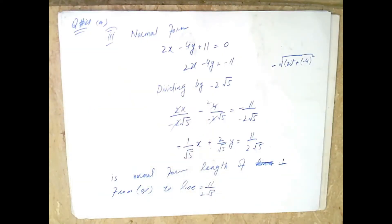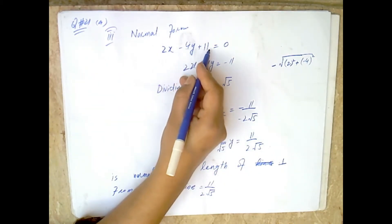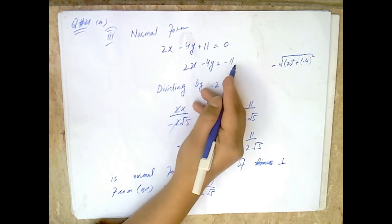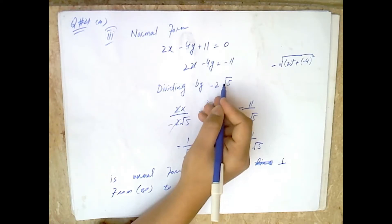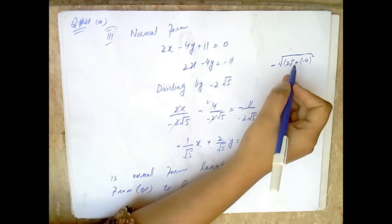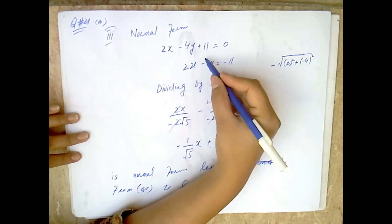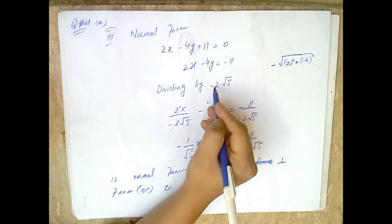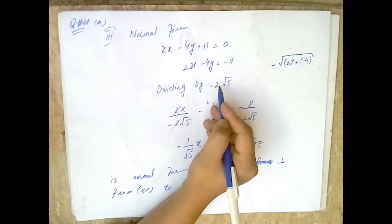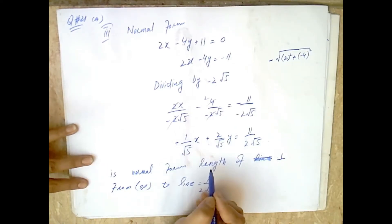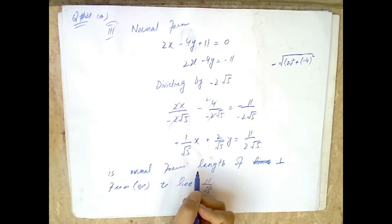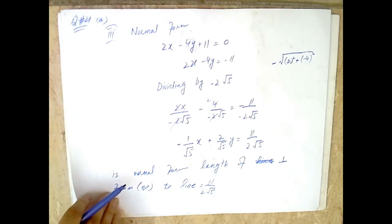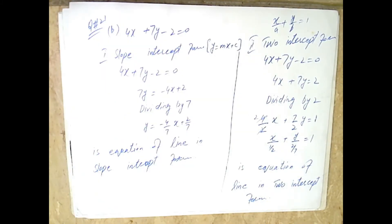The third form is the normal form. From 2x minus 4y plus 11 = 0, we get 2x minus 4y = minus 11. We divide both sides by minus sqrt(2² + 4²) = minus sqrt(4 + 16) = minus sqrt(20) = minus 2*sqrt(5). After division, we obtain the normal form. The length of the perpendicular from (0,0) to the line is 11/(2*sqrt(5)).